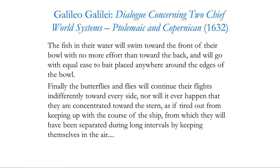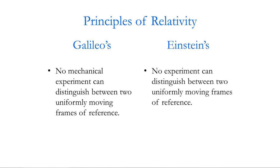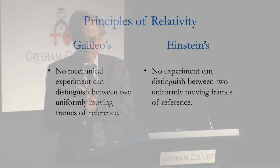What did Einstein do? Here we have Galileo's principle of relativity. This is true genius. What does Einstein do? He rubs out the word 'mechanical'. No experiment can distinguish between two uniformly moving frames of reference. Not only can no mechanical experiment distinguish between them, but no optical experiment can distinguish between them either.